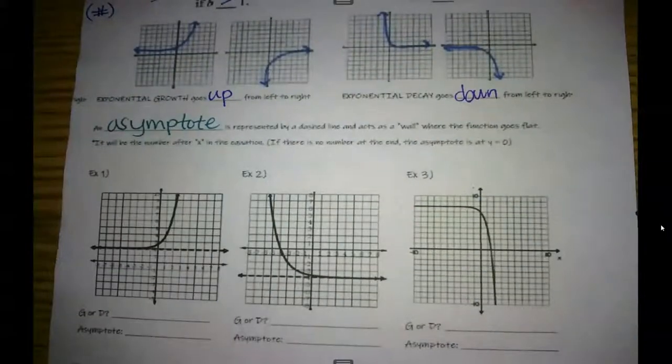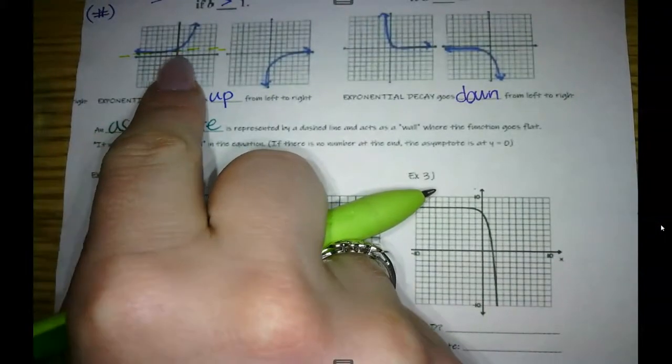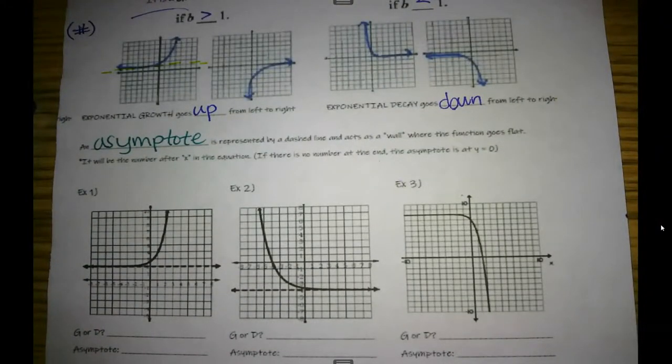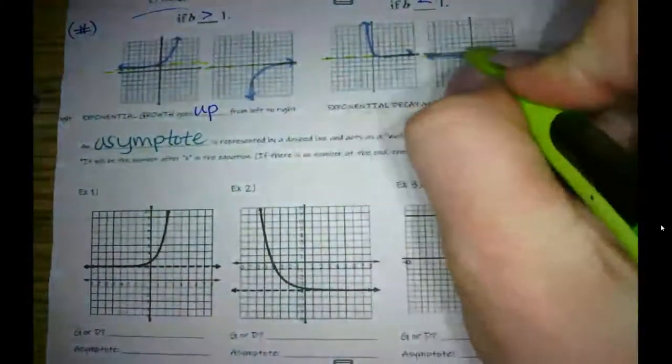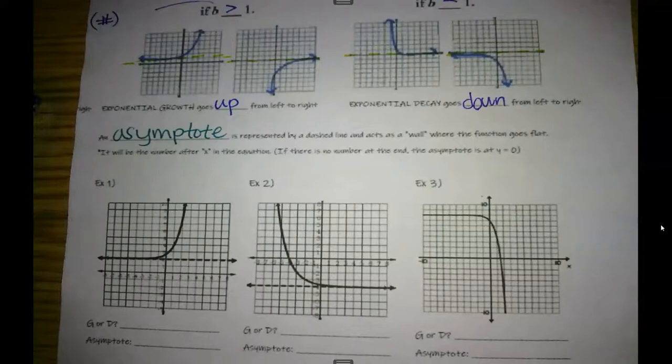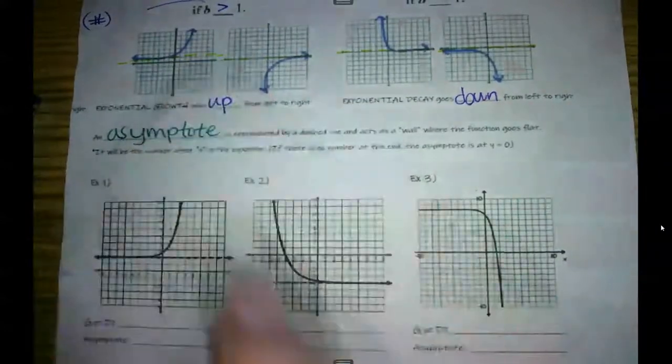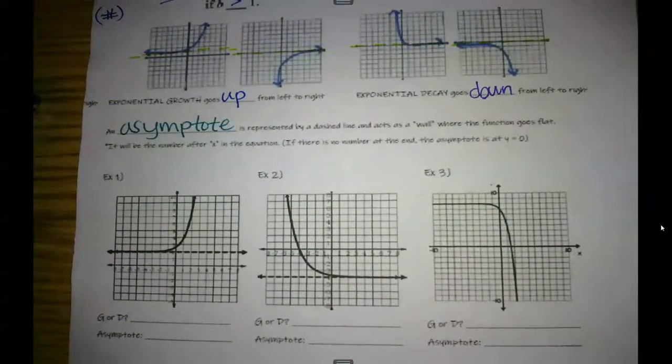And that's just an invisible line. So this one, let's see if this green will show up. Right here, there's this invisible line that this graph is never going to touch and it's never going to cross. It's going to look like it gets really close to it. And it's going to get really close, like 0.00001, close to it. But it's never, ever going to touch it or cross it. So then this one would be right here, this one would be right here, and this one would be right here. Okay? So that's our invisible line. So as soon as you see the graph starting to bottom out, then there's a line right there. And we write that line as a y equals line because it's a horizontal line.